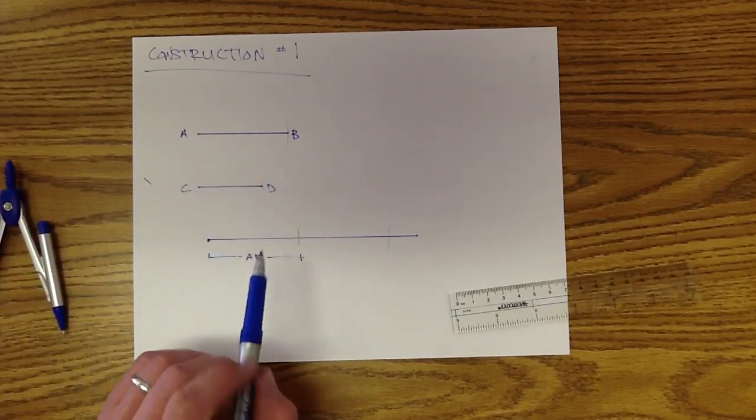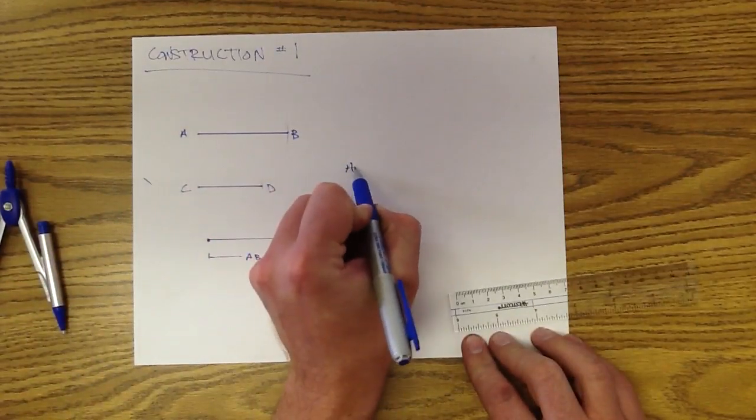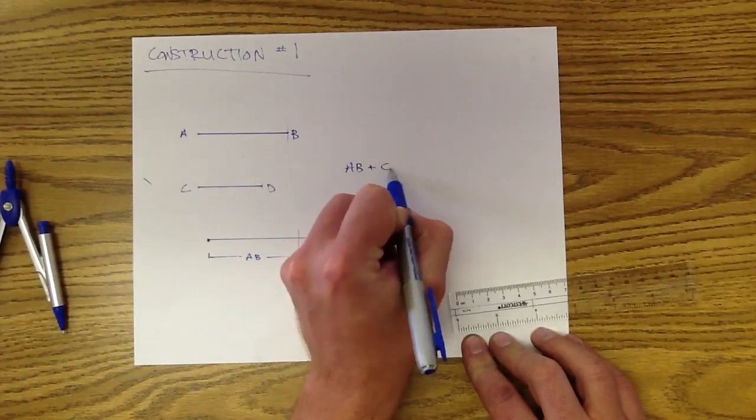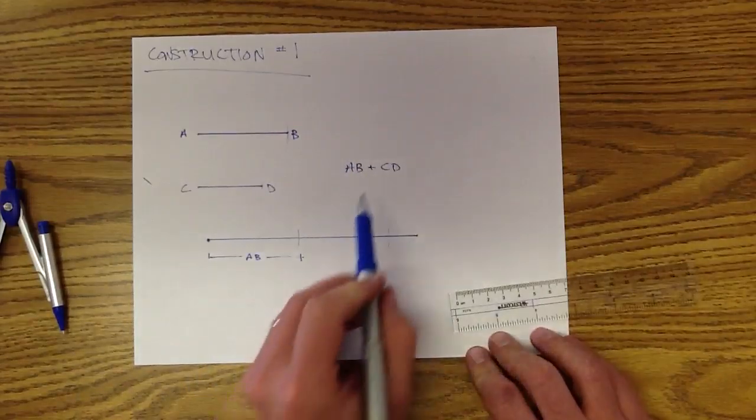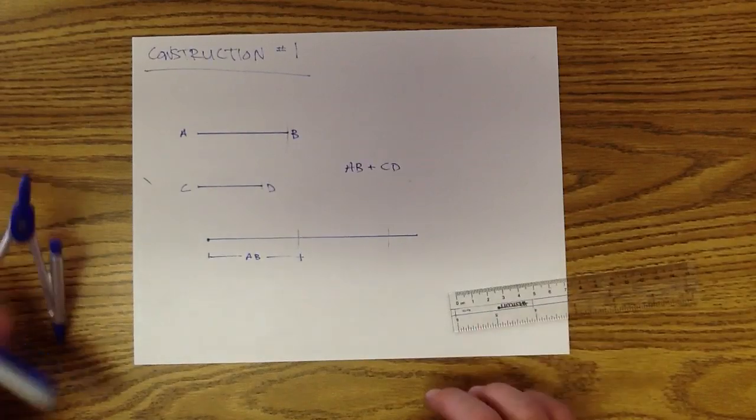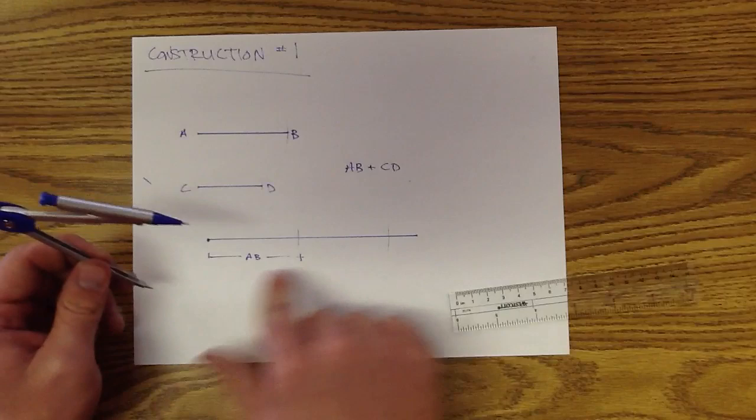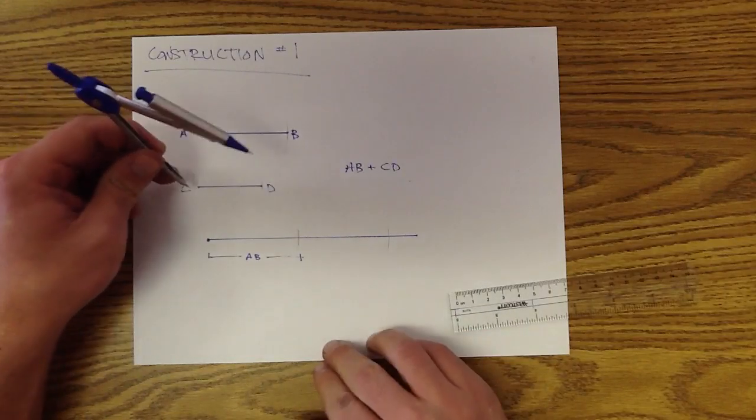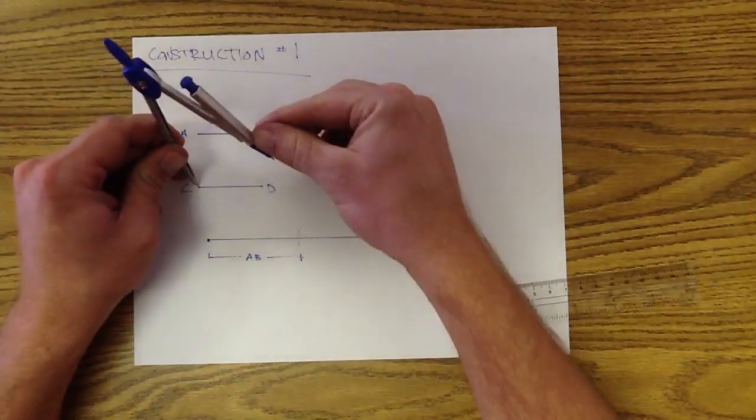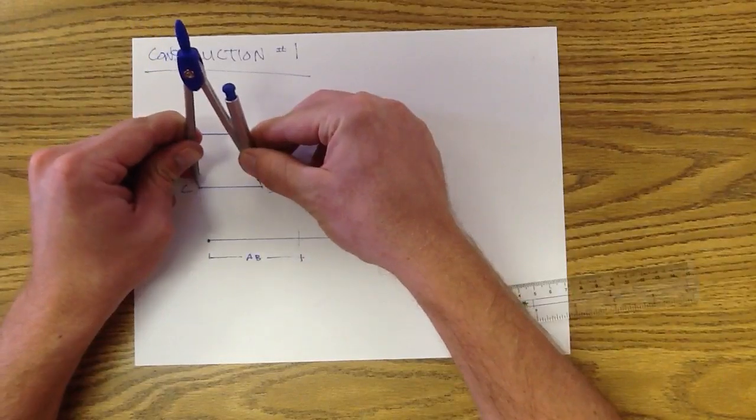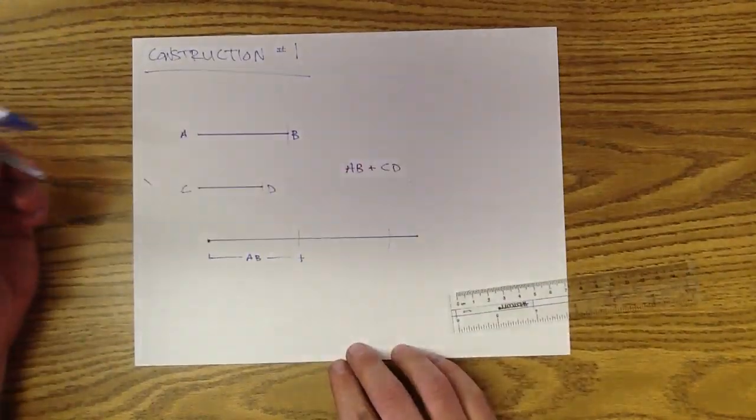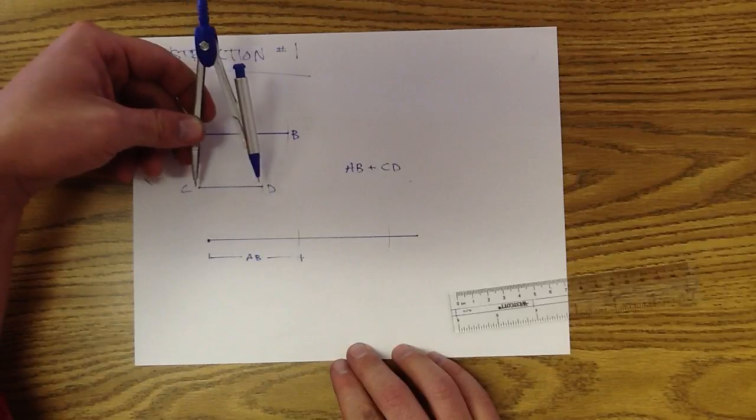Now let's say I wanted to do AB plus CD. Now the length of the segment AB plus CD is going to be very similar to what we did before. So as you can see, we already have AB on here. So now if we add CD to it, let's figure out the length of CD. Take your compass, measure it out, figure out what is the length of CD.